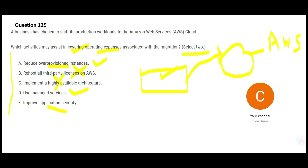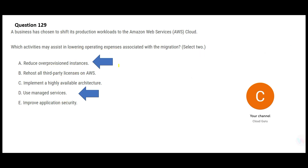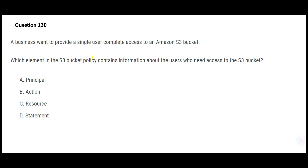Option E says improve application security. If you are focused on improving security, you might end up encrypting data at rest and in transit, which are expensive operations that will increase, not reduce, your operating expenses. So the final answers are A and D.